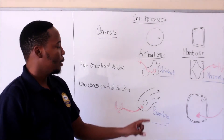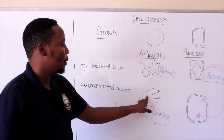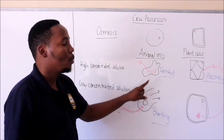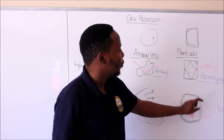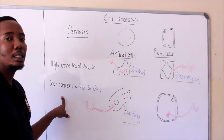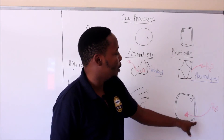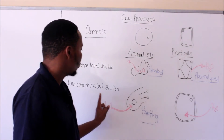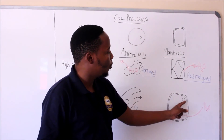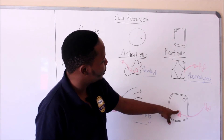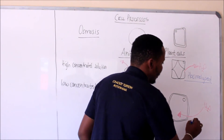When an animal cell bursts, all the internal contents escape and the cell dies. The reason these cells burst is because they only have a cell membrane — they don't have another membrane to support the pressure from the water. But look at plant cells: if you put a plant cell in a low concentrated solution, water molecules again move from the solution into the plant cell. Once water gets into the cell, it raises the pressure and the volume increases. We say this cell is turgid.